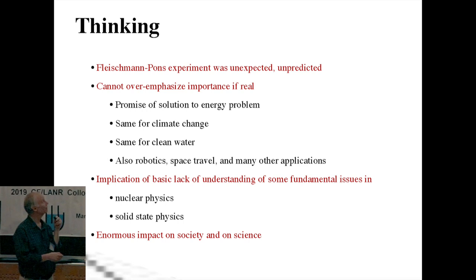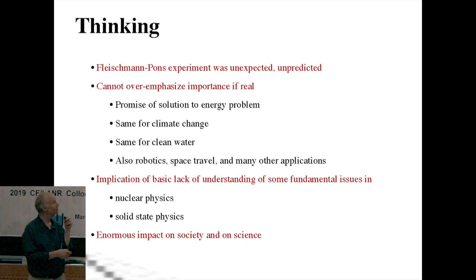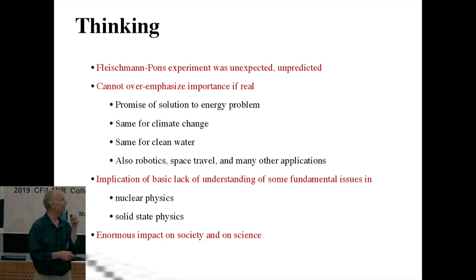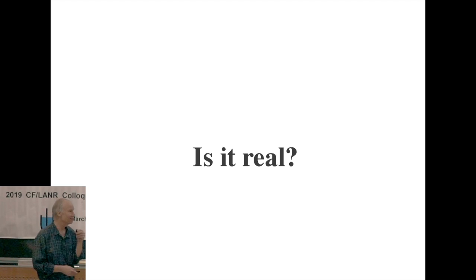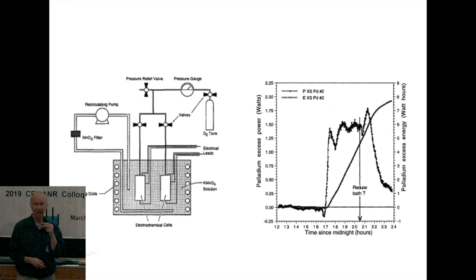So, I'm thinking about this. The initial claim was unexpected, unpredicted. It cannot be overemphasized, the importance of this, if it's real. We could solve the energy problem, solve the climate change problem. We could get clean water for people throughout the world. Let me tell you what robotics would do with a light, high energy density power source. Space travel would be revolutionized, and there's many other applications. If, you know, back in 1989 Fleischmann and Pons are correct, then there's a lack of rather basic understanding of fundamental issues in nuclear physics and solid state physics. Once again, I cannot overemphasize the fundamental impact on society of a technology based on this effect. So, is it real? Again, this is 1989, is it real? This is not a 2019, is it real? The way you tell whether it's real is you go in the lab and you start doing experiments.